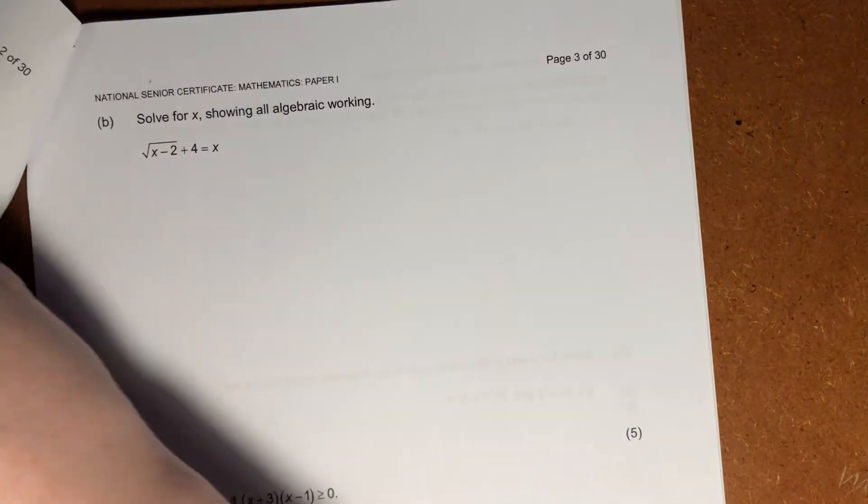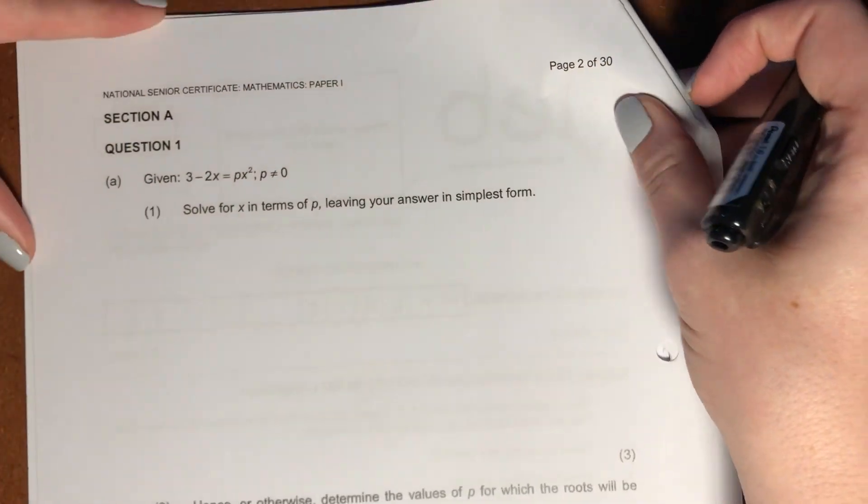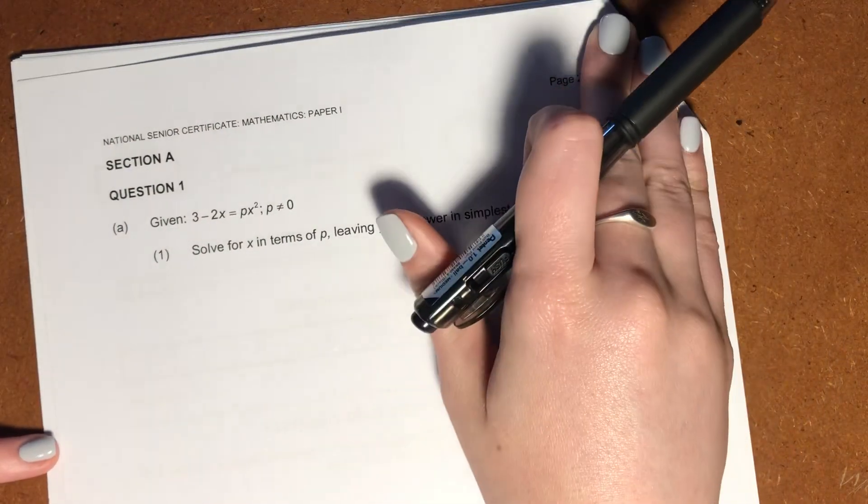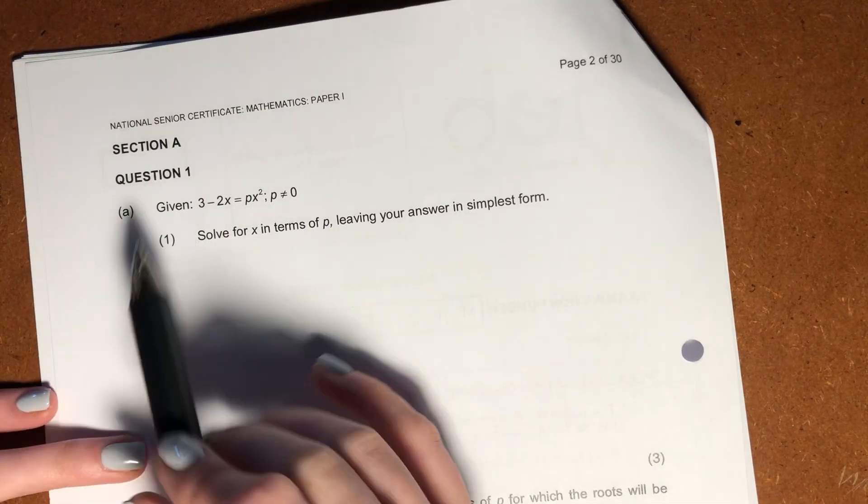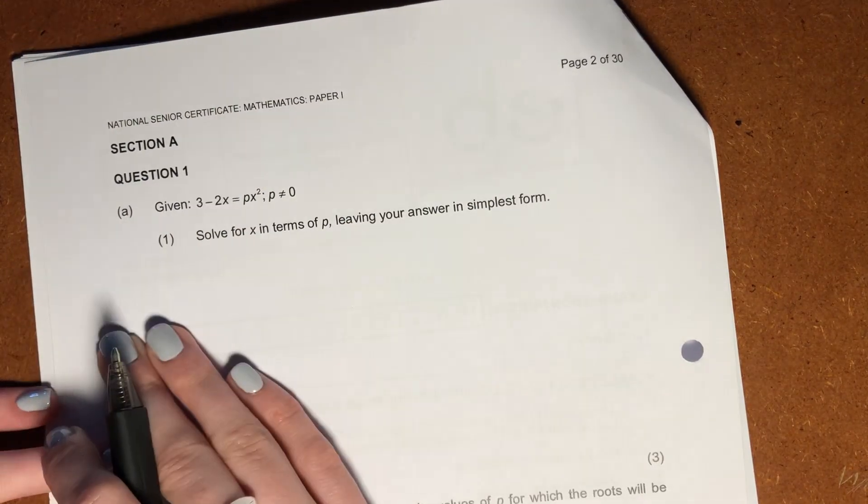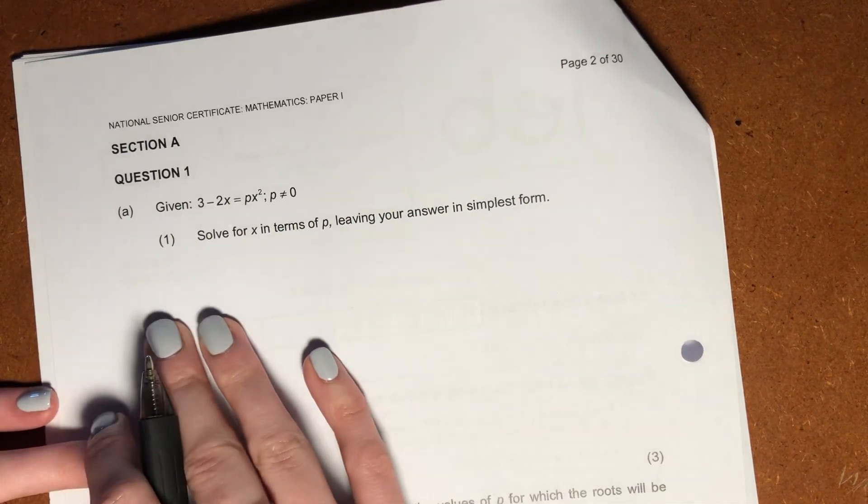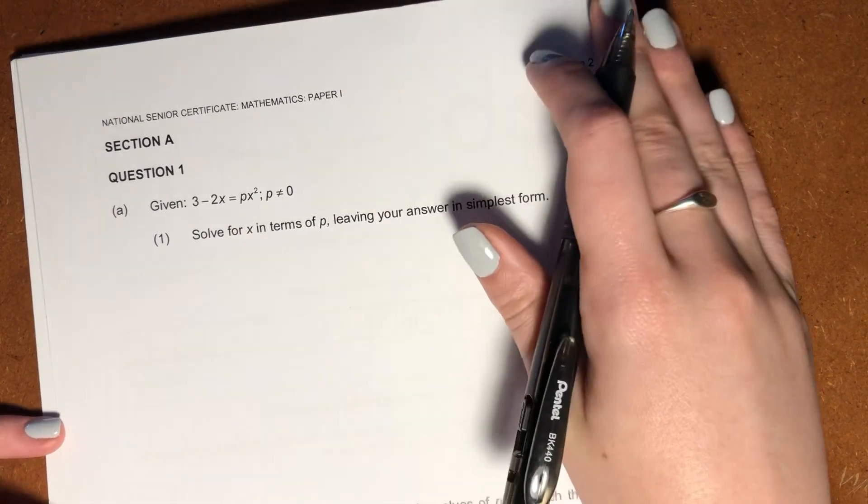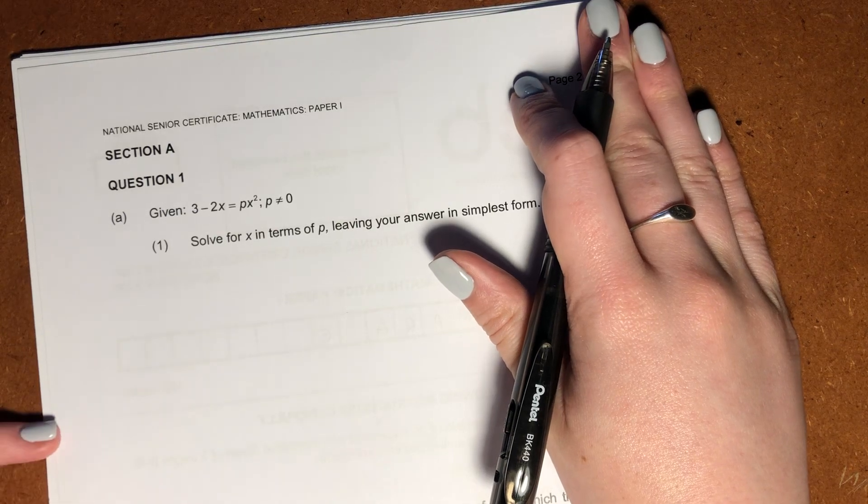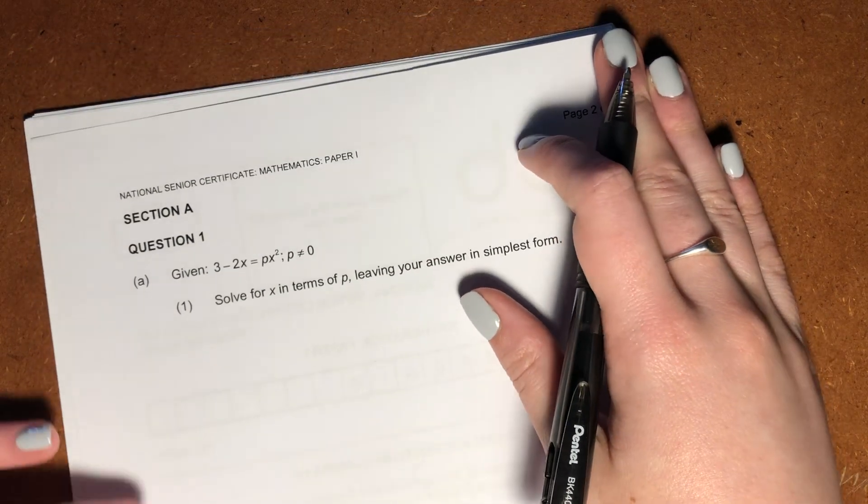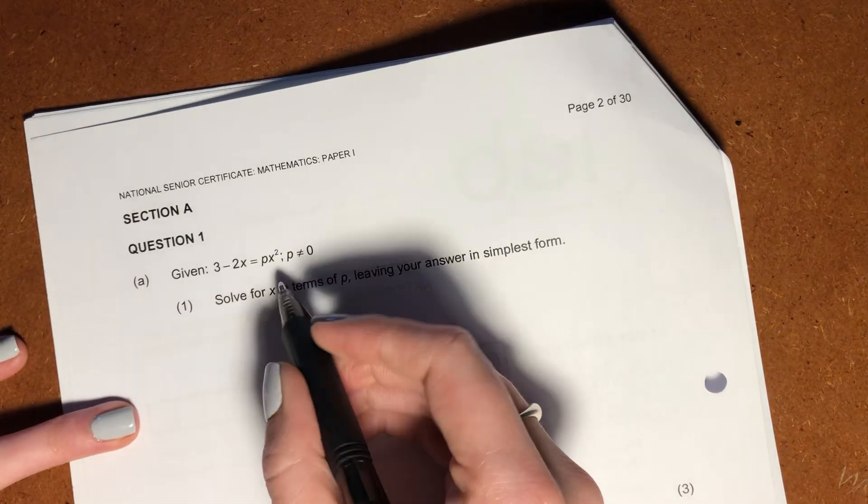Let's jump in. As I turn over the page, please remember that there's always a section A and a section B in these papers. Section A generally is going to be easier questions where you should be getting the majority of your marks. Section B is where it gets a little bit more complex, not impossible, but a bit more difficult to get all the marks that are available. So let's just get going.